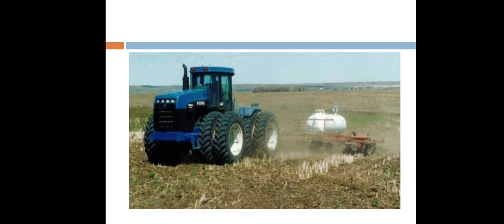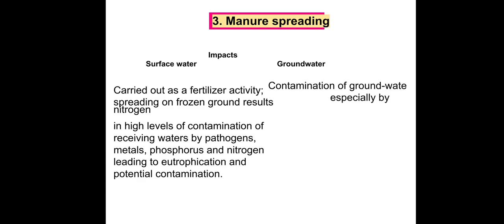The picture shows tillage and fertiliser activities. Manure spreading also causes two types of water pollution: surface water and groundwater pollution. Surface water carries fertiliser activity spread on frozen ground, resulting in high levels of contaminants in receiving water, including pathogens and metals.